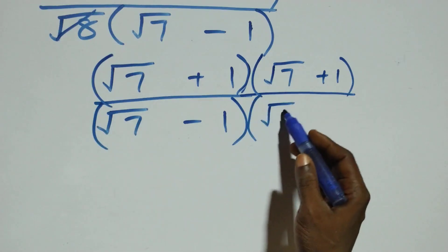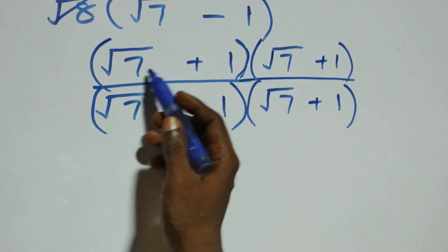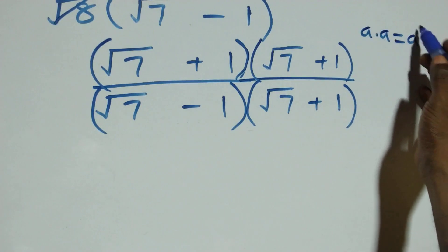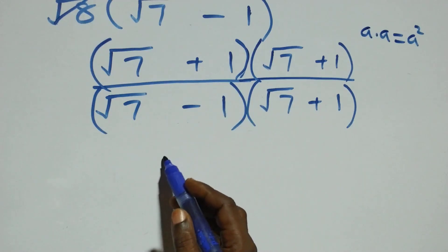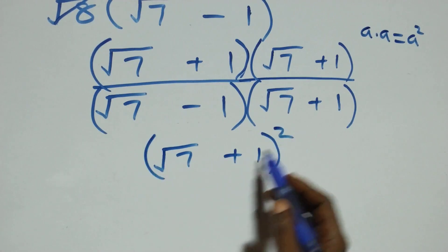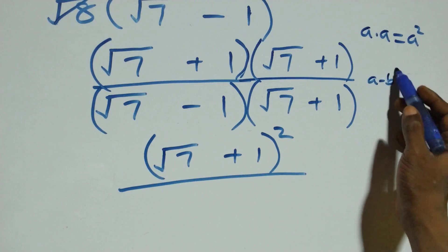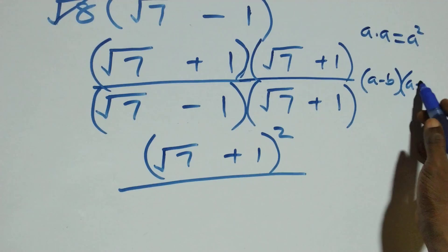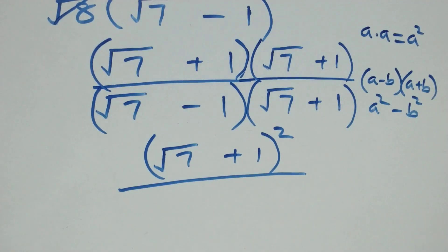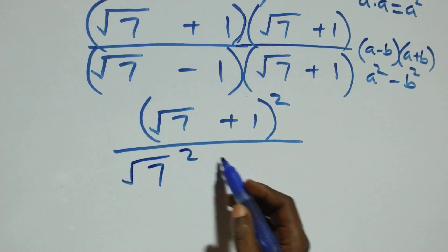Next step: these two brackets multiply. Following the rule a times a which can be written as a squared, we can write the numerator as root seven plus one, all squared. In the denominator we have the format a minus b times a plus b, which equals a squared minus b squared — the difference of two squares. So the denominator becomes root seven squared minus one squared.